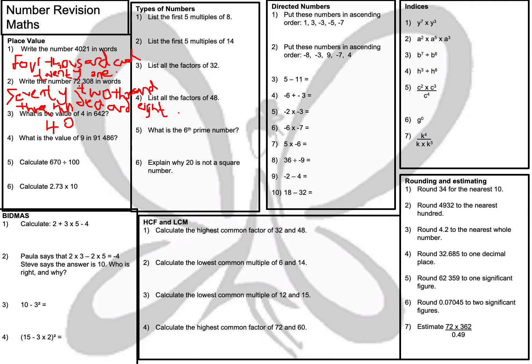Question number 4: what is the value of the number 9 in 91,486? Well, the value is 90,000 — so it's 9 and then 4 zeros, giving 90,000.